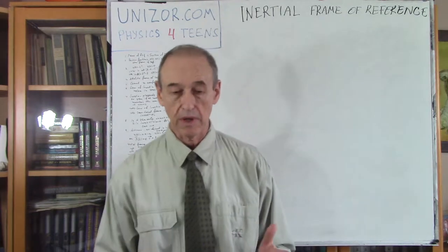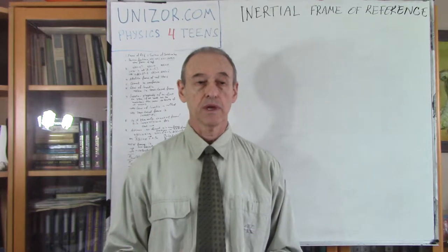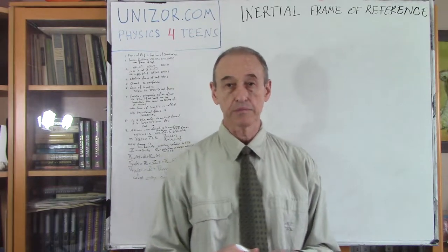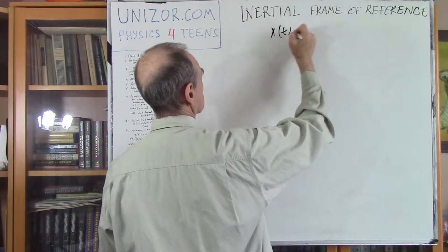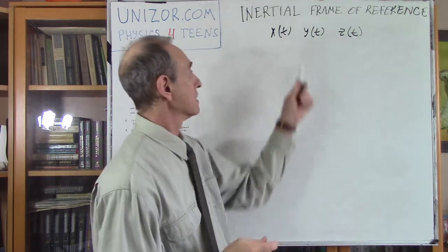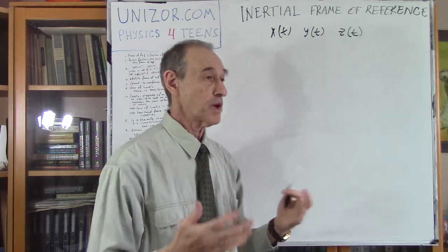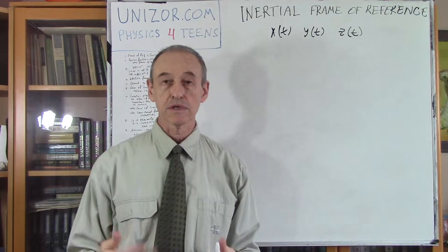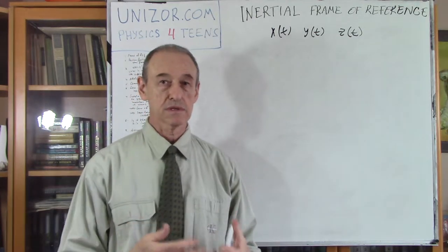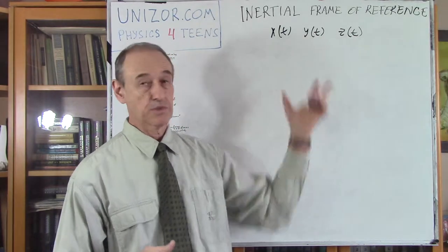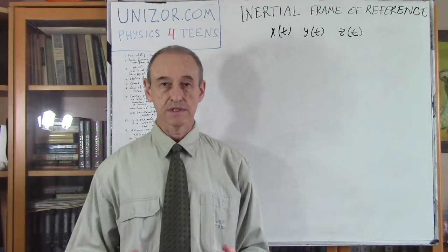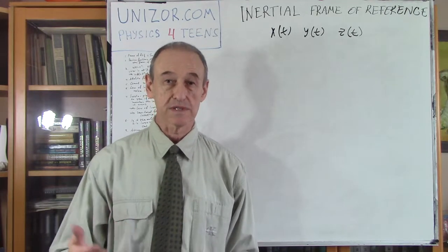Now let's talk about the position of any object as it moves. Position we usually describe by position functions — these are coordinates in some system of coordinates, in some frame of reference, as functions of time t. Whenever we are talking about some numerical characteristic of the position, we are implying that there is a certain frame of reference relative to which the position is defined. Sometimes we don't explicitly specify this — we implicitly understand what it is.